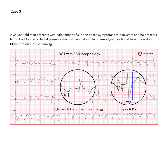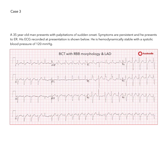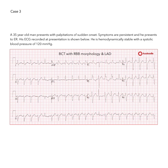Importantly, the cardiac axis is deviated to the left. There is clear evidence of AV dissociation with two capture beats present during the tachycardia. Also, on analysis of the rhythm strip, we can identify what we believe to be two distinct P-waves.